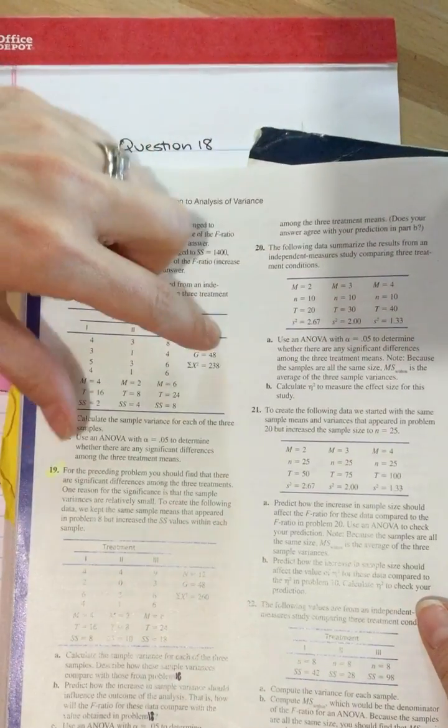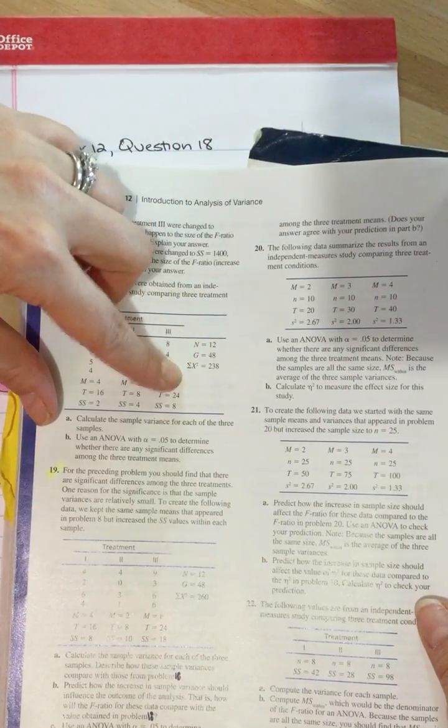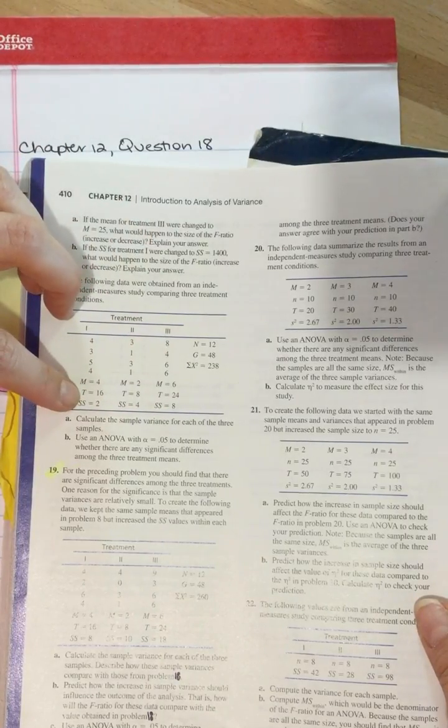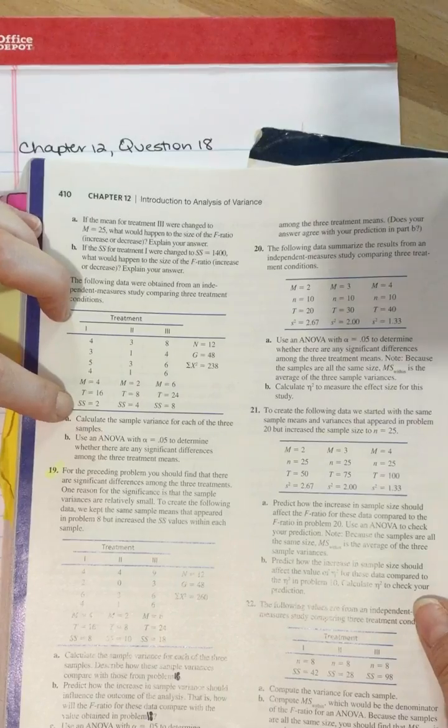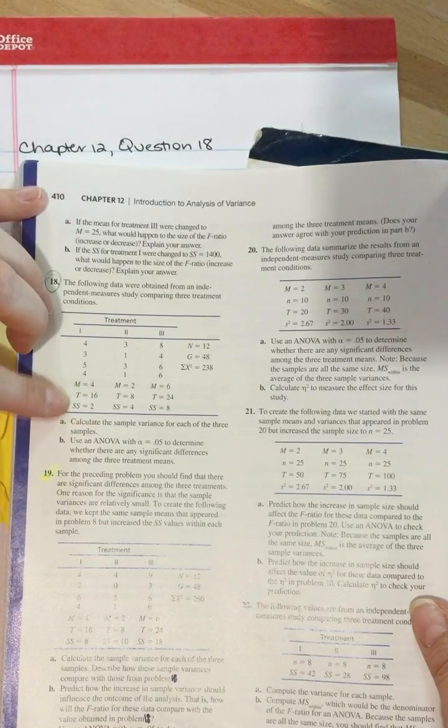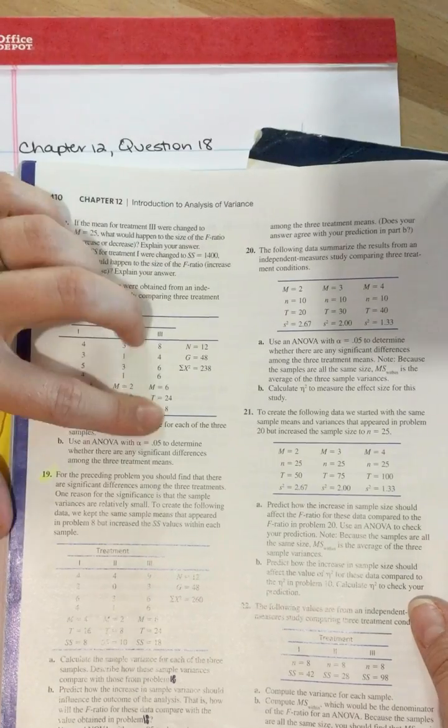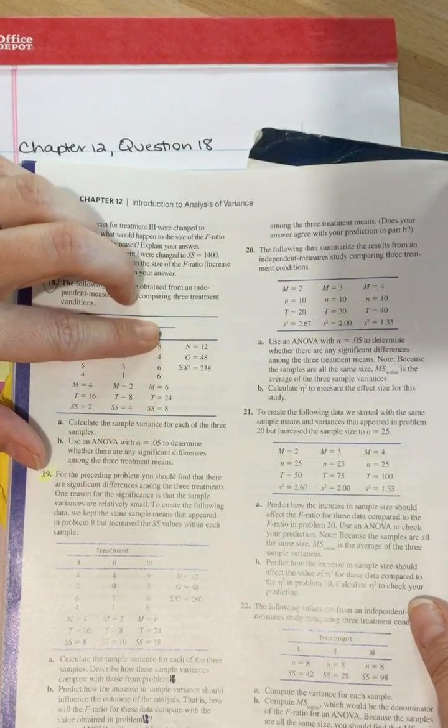Some important pieces to note: we're given N, G, sum of X squared. We've got means, T values, and sum of squares. So the values here, this sum of squares relates to treatment 1, these values to treatment 2, and these values to treatment 3.